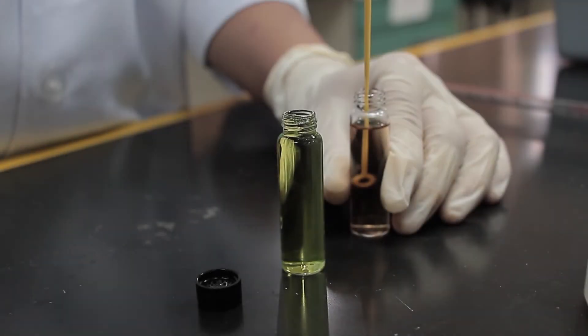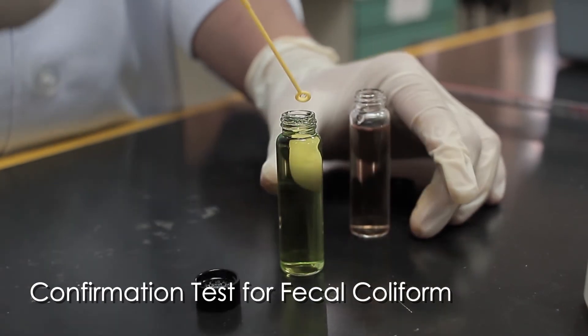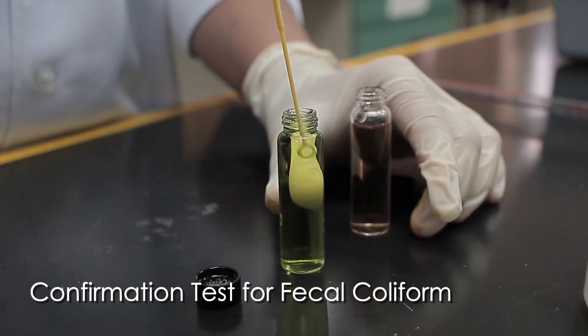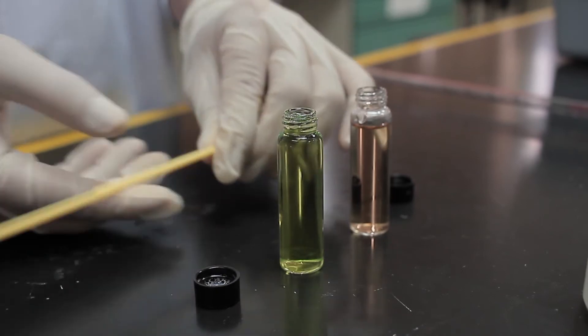From the positive LT broth tube, inoculate an EC medium broth tube using an inoculation loop. Put the loop into the positive cloudy LT broth tube and immediately into an EC medium broth tube.